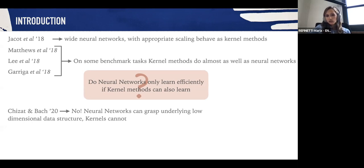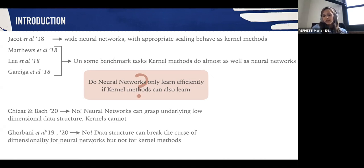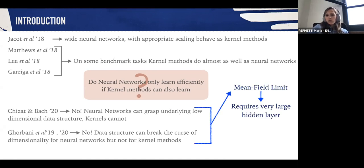The answer to this seems to be no. For instance, Ghorbani and colleagues showed in 2020 that neural networks can grasp the underlying low-dimensional data structure while kernel methods cannot. Furthermore, Ghorbani and others showed that data structure can break the curse of dimensionality for neural networks while they can't for kernel methods. Fundamentally both these works focus on the mean field regime of neural networks, which is a regime in which the hidden layer is sent to infinity, which means that the neural network is very large.